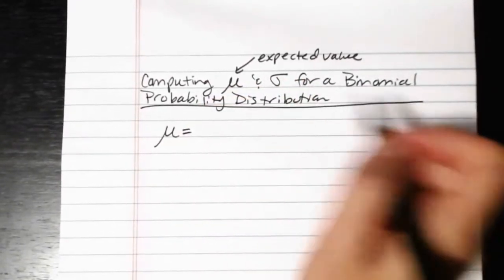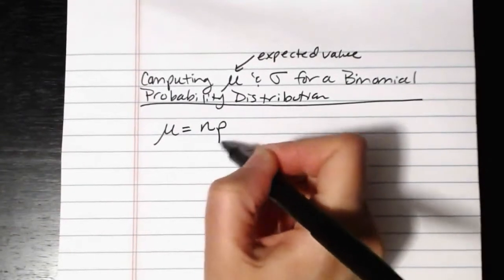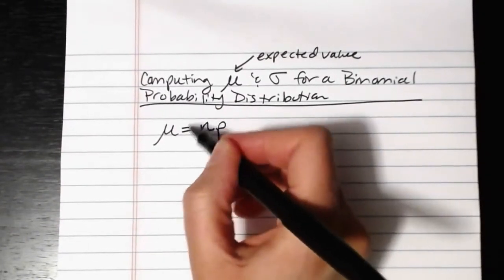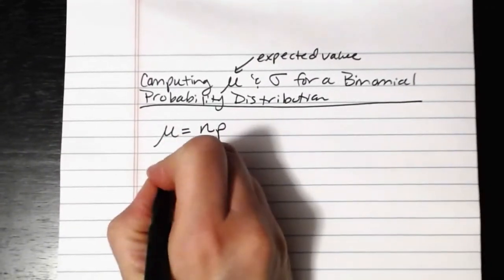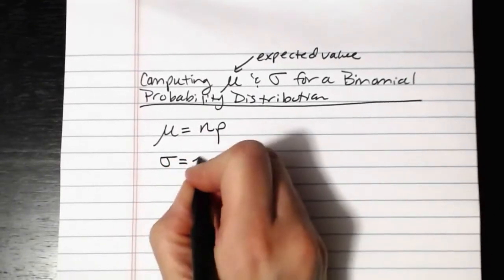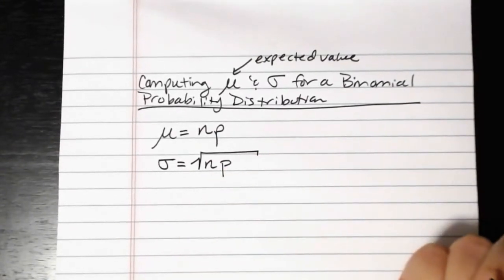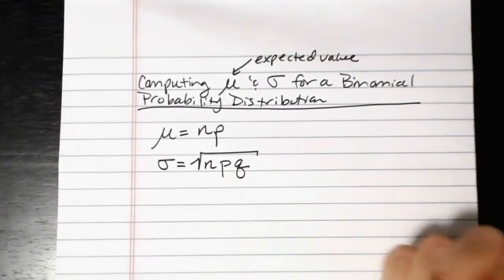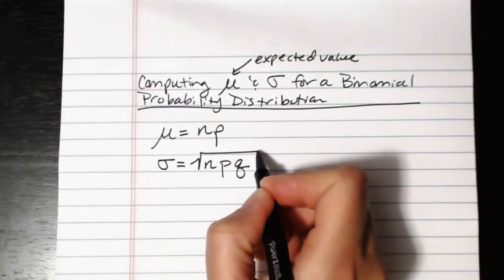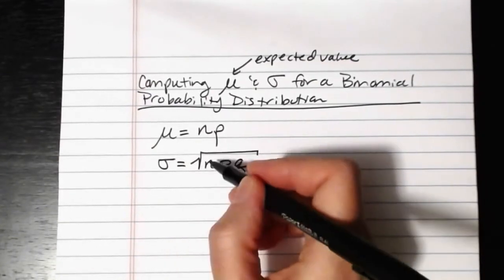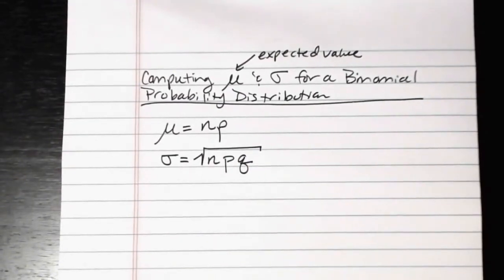If you choose to use the formulas, they're actually very straightforward. The mean of a binomial probability distribution is equal to n times p — the probability of success on any given trial times the total number of trials. The standard deviation is the square root of n times p times q, where q is the probability of failure. That entire quantity is underneath the square root, so you multiply n, p, and q and then take the square root of that product.